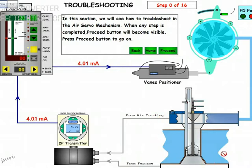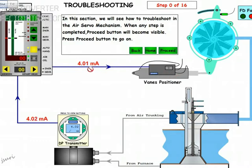This is the boiler. You can see one line coming — the air trunking line — to the DP transmitter, and one from the furnace. The signal from the DP transmitter goes to the air oil controller and then to the main positioner, which pushes the positioner to increase or decrease the flow to the boiler as per the load.